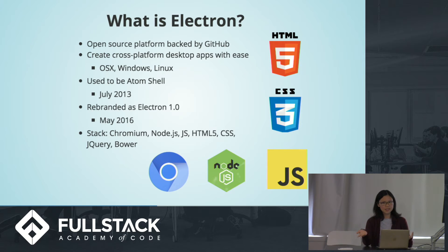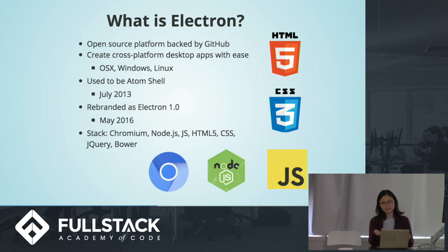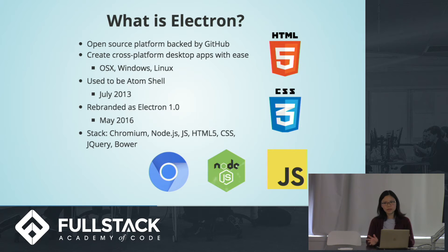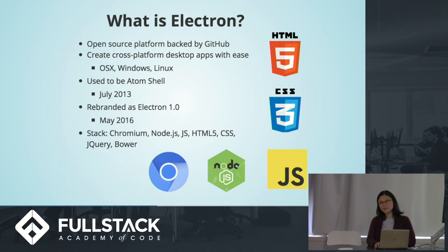Electron works regardless of whether it's OSX, Windows, or Linux. It was actually released two years ago in July 2013, initially called Atom Shell, and now rebranded as Electron as recently as this year in May. The stack uses Chromium, which is Google's open source web browser platform — very lightweight. It runs on Node, JavaScript, HTML5, CSS, and jQuery as well — all our good friends that we're used to.